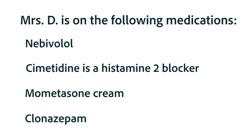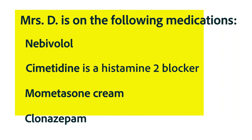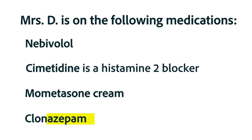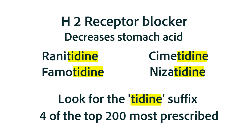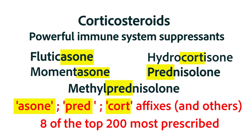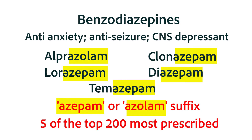Back to the medications Mrs. DiGero is taking. Recall from chapter two that beta blockers end in O-L-O-L, the benzodiazepines end in '-azepam' or '-azolam,' and the corticosteroids have a number of prefixes and suffixes including '-asone,' 'cort,' and 'pred.' So you did well if you identified nebivolol as a beta blocker that treats hypertension, cimetidine as a histamine 2 antagonist that decreases stomach acid, mometasone cream as a corticosteroid that decreases the immune system response, and clonazepam as a benzodiazepine that treats seizures or anxiety.